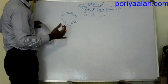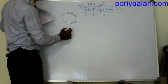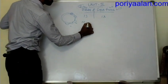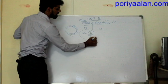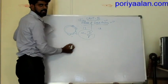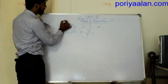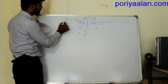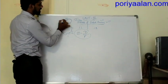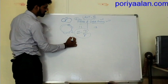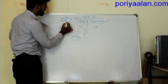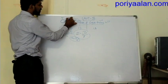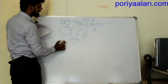In the Geartrain section, there is a formula. Module m is equal to D divided by T — that is, pitch circle diameter divided by number of teeth. This is the module. If two gears are engaged, the module must be the same for both. If one gear has module 5 and another has module 4, they cannot engage.